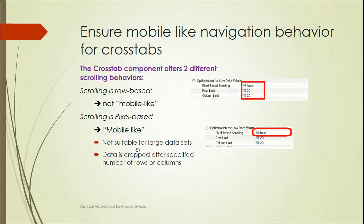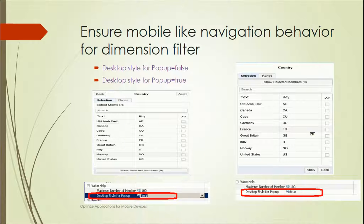We need to make the pixel-based scrolling property true so that it will be available as a mobile application. Mobile applications are not suitable for large datasets because mobile devices are not capable of holding large datasets — the data is cropped after a specified number of rows or columns. But we need to enable this option, setting pixel-based scrolling to true, when we want to develop a mobile application in Design Studio.